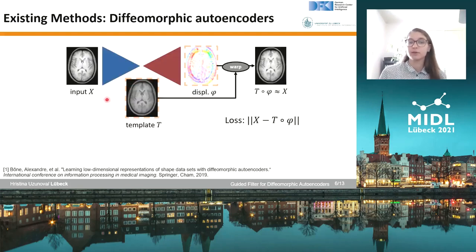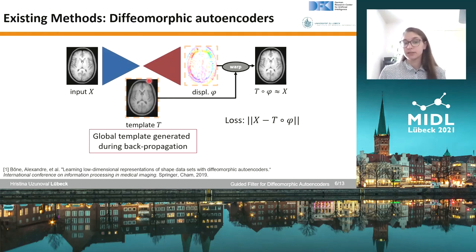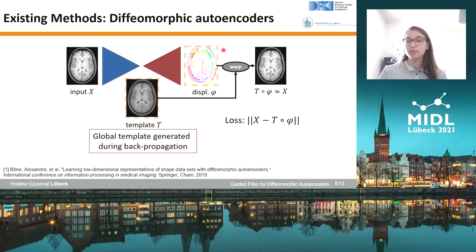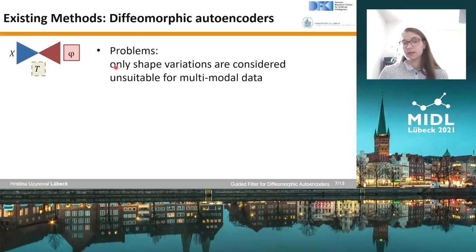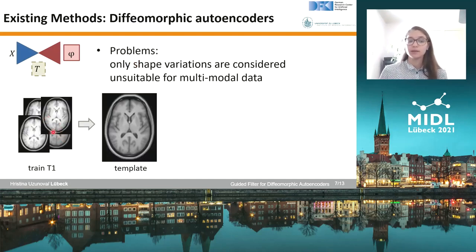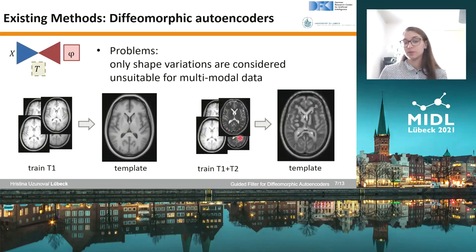To cope with this problem we can look at diffeomorphic autoencoders. They only have one decoder that generates a displacement field; however, they generate a global parameterized template obtained during backpropagation, which can be warped with the displacement field to produce an image similar to the input. The problem with this method is that it can only model shape variations. So if we train on a T1 dataset only we end up with a smooth, nice template; however, if we mix our training dataset with different sequences we end up with a really rough, unnatural template.